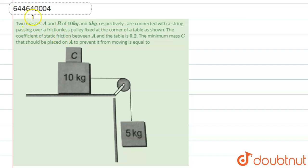Hello students, now we're going to see this question. The question says that two masses A and B of 10 kg and 5 kg respectively are connected with a string passing over a frictionless pulley fixed at the corner of a table. The coefficient of static friction between A and the table is 0.2.